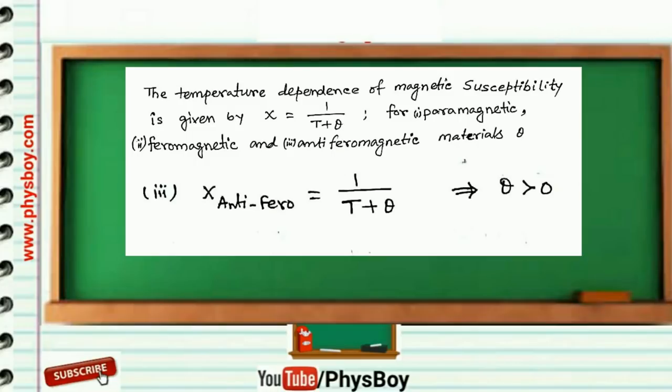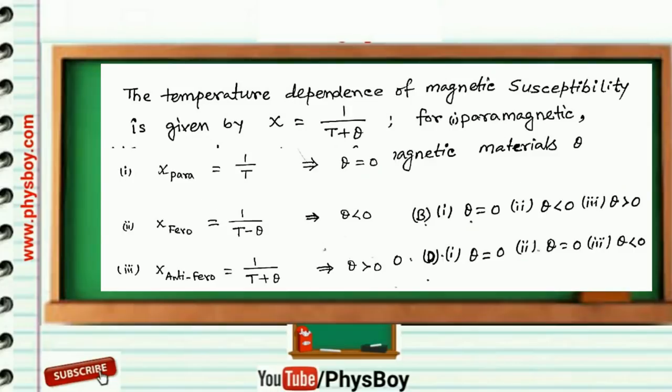So finally, for paramagnetic, ferromagnetic, and antiferromagnetic materials, theta should be 0, less than 0, and greater than 0 respectively. So option B is the correct answer. If this video is helpful, then please share it to any physics-related social media group.